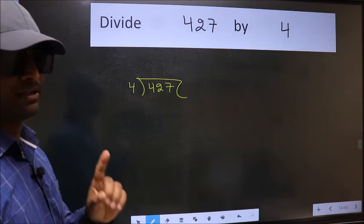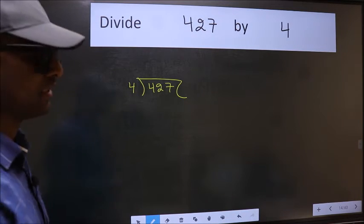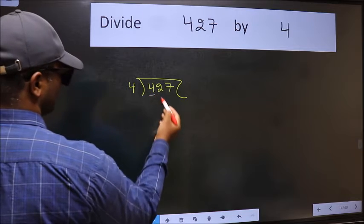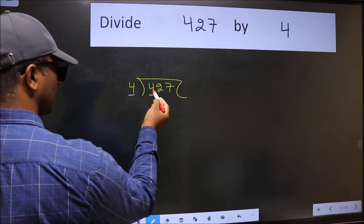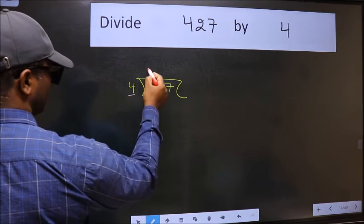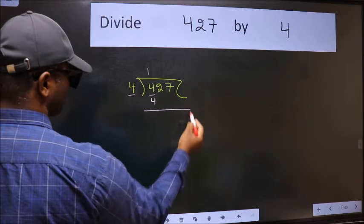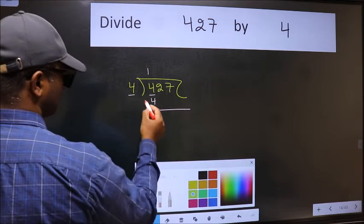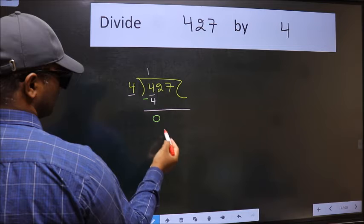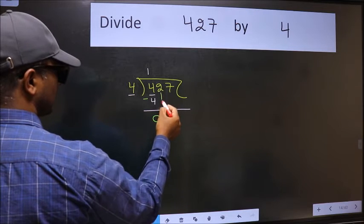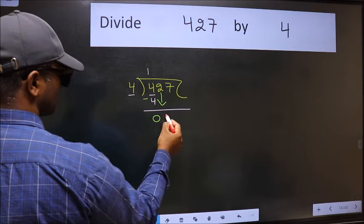This is your step one. Next, here we have four, here also four. When do we get four in four table? Four ones four. Now we should subtract, we get zero. After this bring down the beside number, so two down.